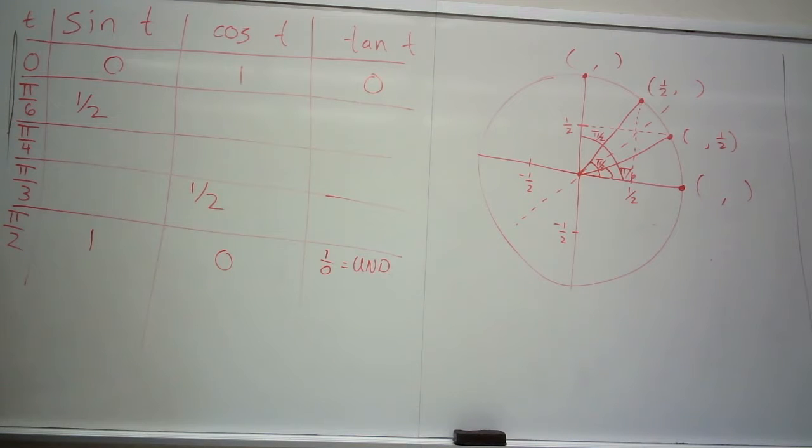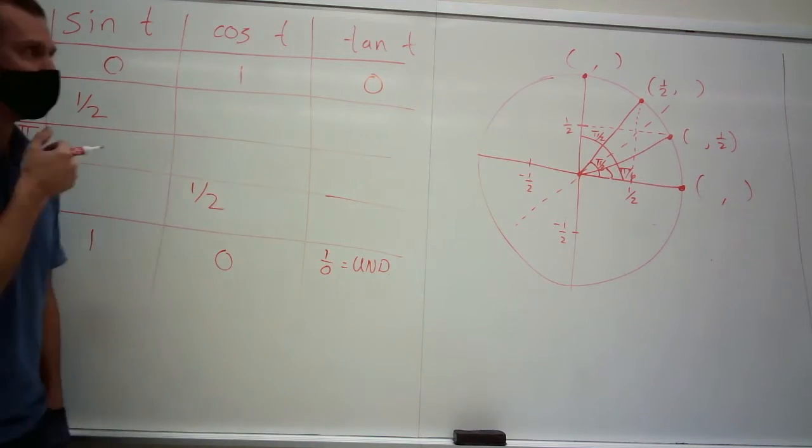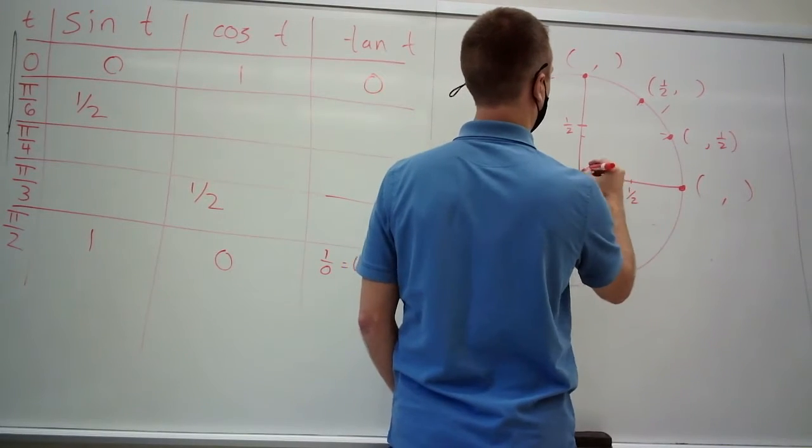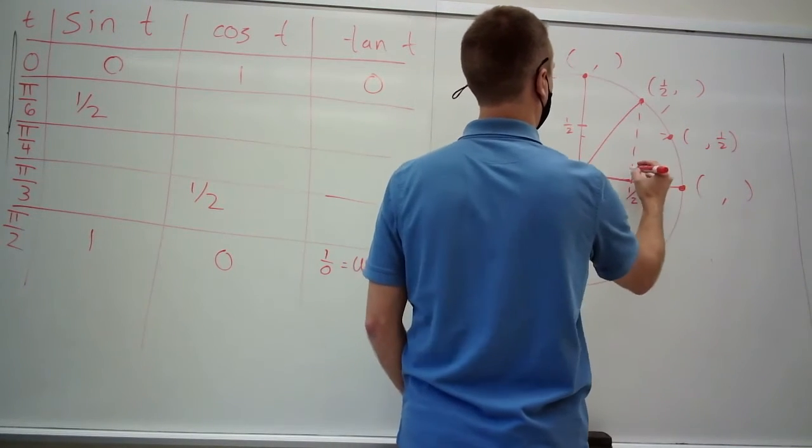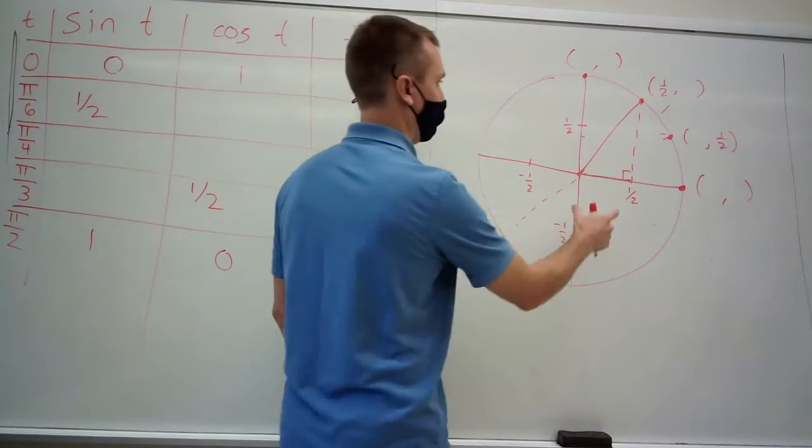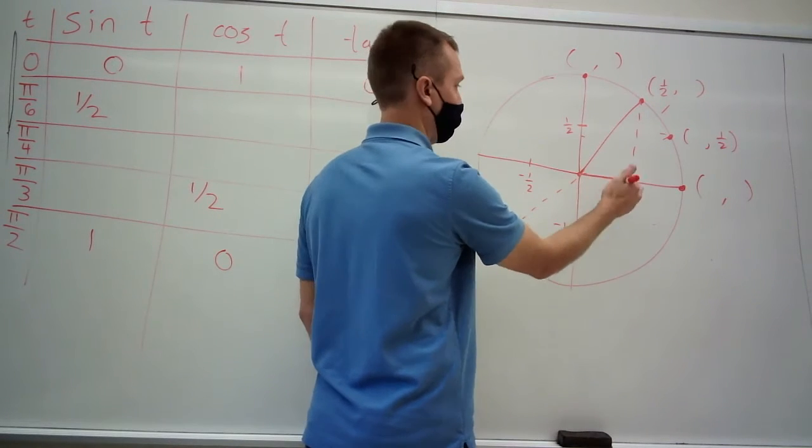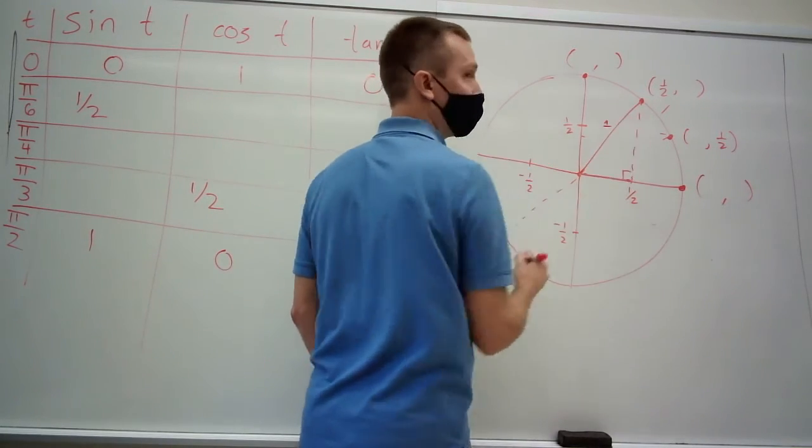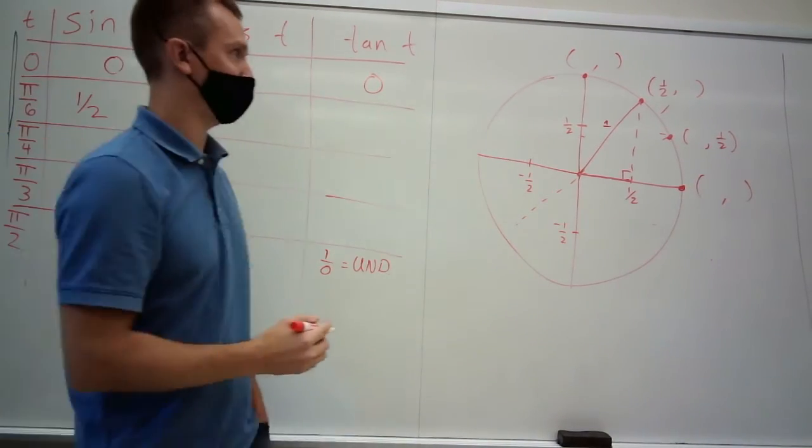Now what about these other ones? Is there a way we can figure out a second coordinate if we know the first coordinate? What do you see here? A right triangle. This bottom length is 1/2. What's the hypotenuse length? One. It's a unit circle, so this is the radius.